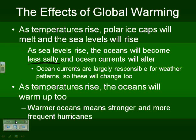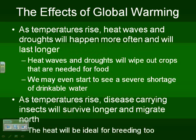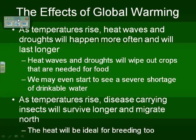Warmer oceans are going to produce stronger, more frequent hurricanes. In addition, droughts are going to start to occur because there's going to be a lack of available water as the temperature rises. Heat waves and droughts are going to become more prominent, and crops and food are going to be dried out and destroyed. You may even start to see less drinkable water.